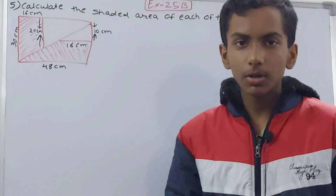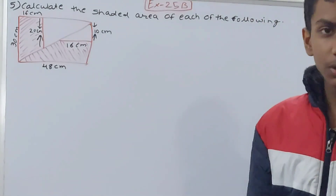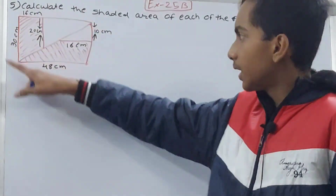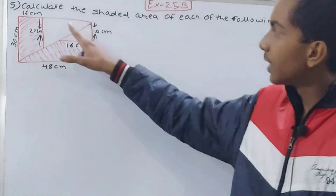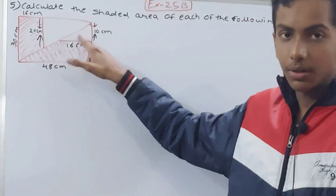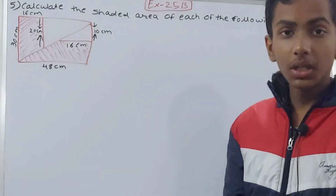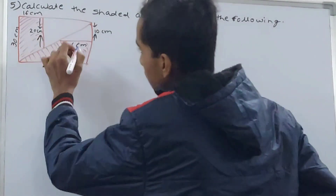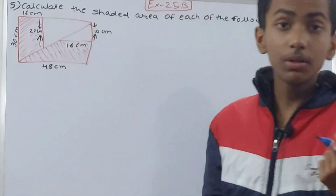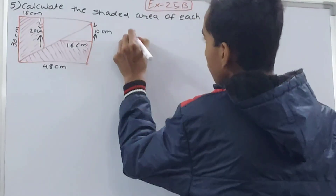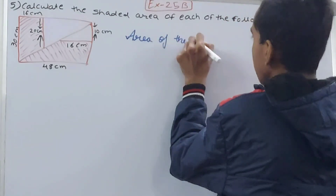Here we have a rectangle and we have to calculate the shaded area. This is not the entire rectangle shaded — some part is left out. You can see two triangles are left out: one triangle here and another triangle there. The shaded area is the rest of the area leaving out the areas of those two triangles. First of all we will calculate the area of the rectangle.